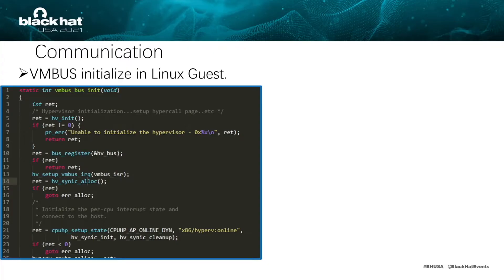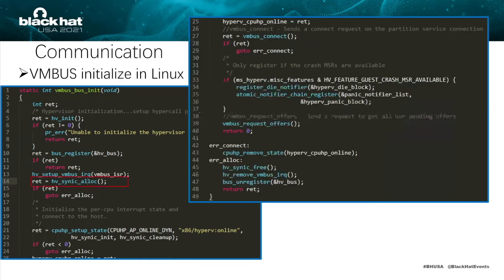The VMBus bus init function is used to initialize the Linux guest VMBus. This function initializes Hyper-V and registers the bus first, then invokes the HVSYNIC log function to send a connect request on the partition service connection. In the end, it sends a request to get all pending offers.